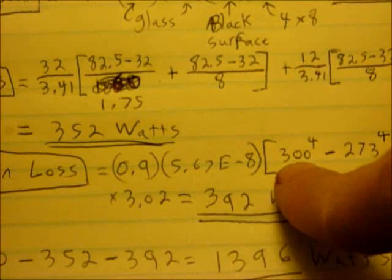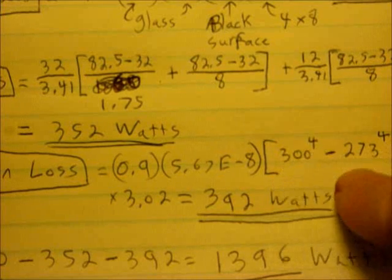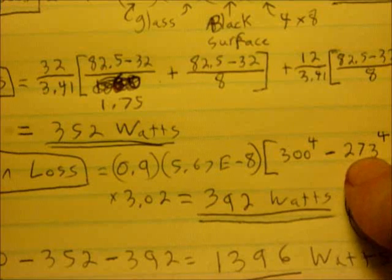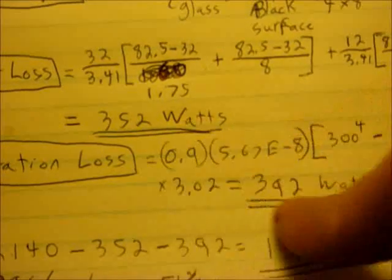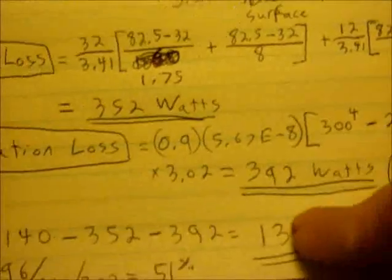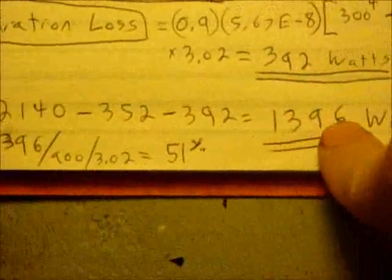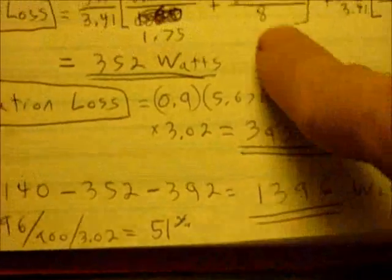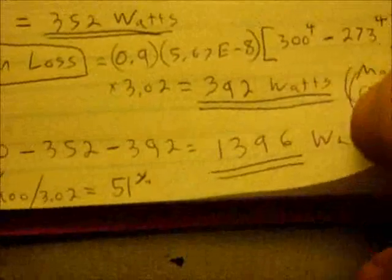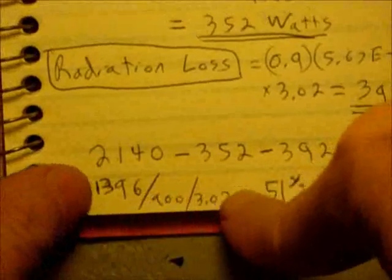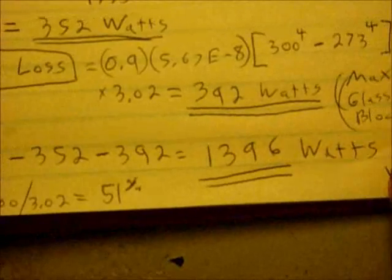So these are looking pretty good. I subtract them from the sun input and I get 1396 as possible for this system which is a little bit more than what I know the air can carry. The efficiency of this using this number is going to be 51 percent, so it's a good box and should work well.